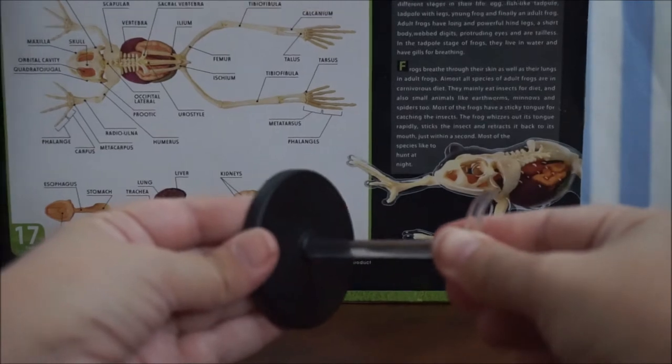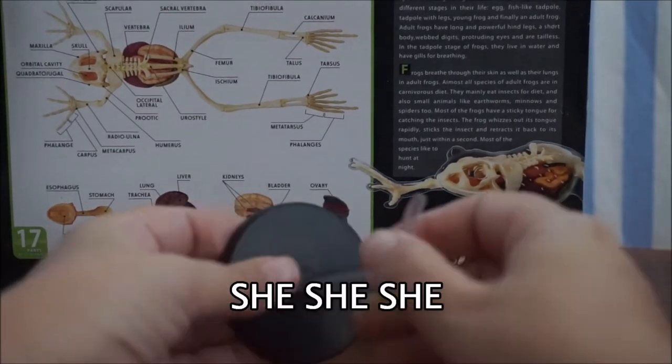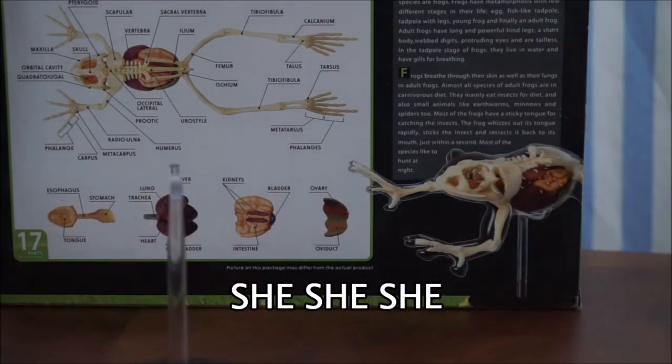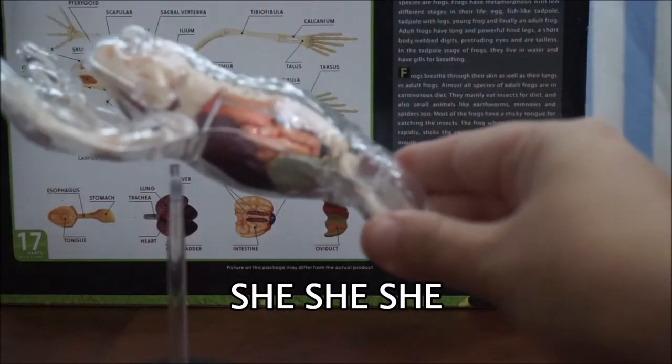There are 17 parts with stand, and this little guy just rests on the stand. He does not clip in or anything like that. He just rests under his little armpits.